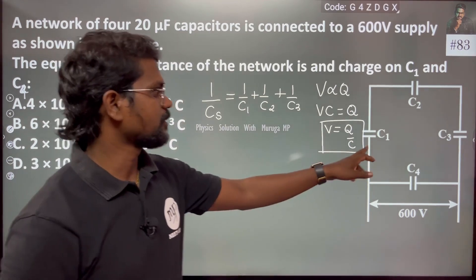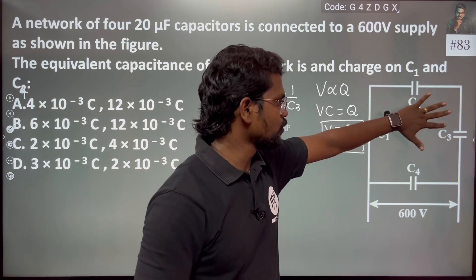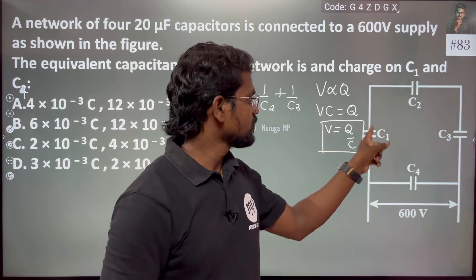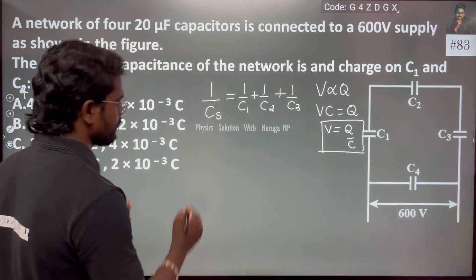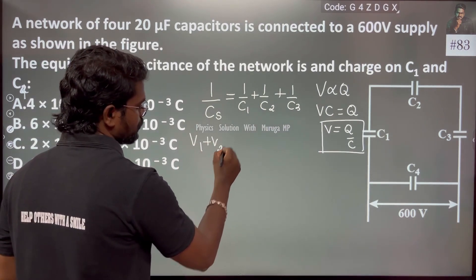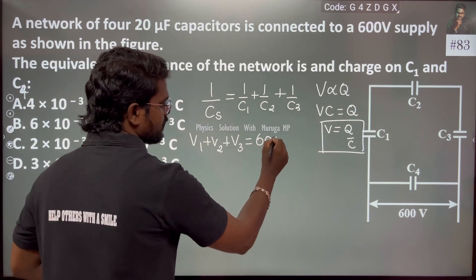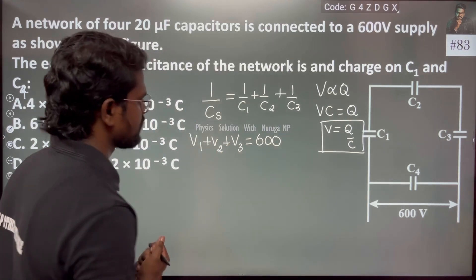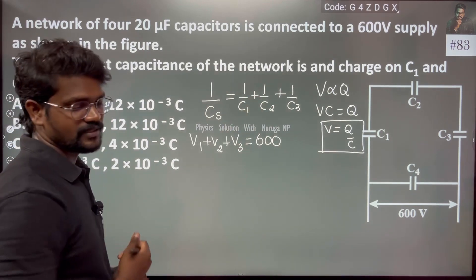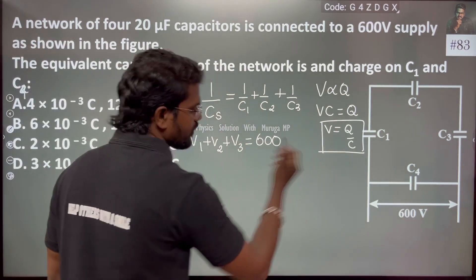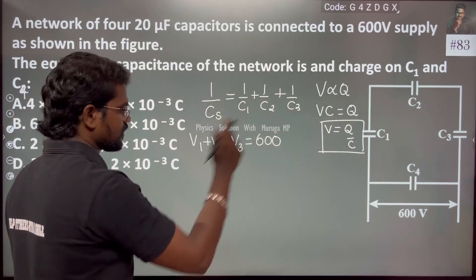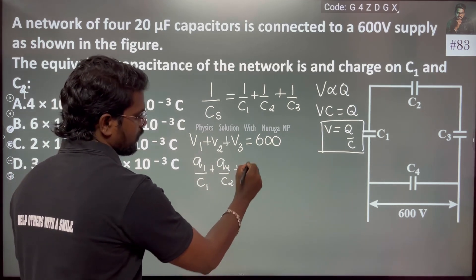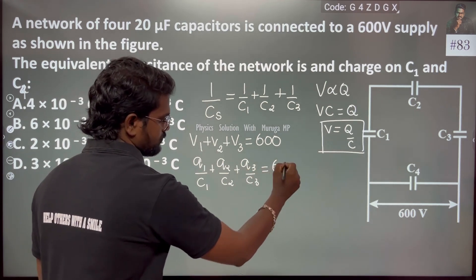The voltage is different for each capacitor. We can say V1 plus V2 plus V3 equals the supplied voltage which is 600. In series, the potential is different, so V equals q by c. For the first, second, and third capacitor, q1 by c1 plus q2 by c2 plus q3 by c3 equals 600.